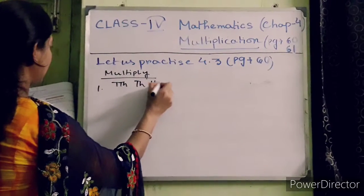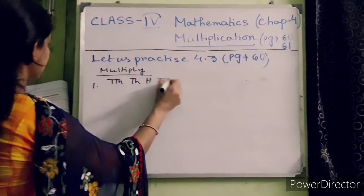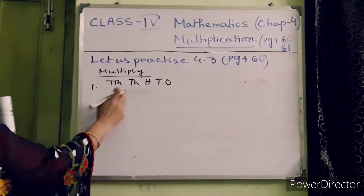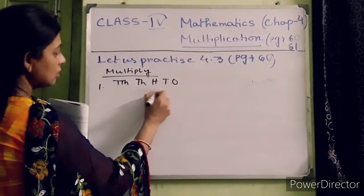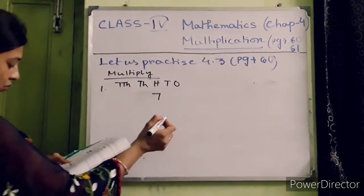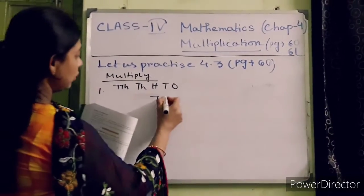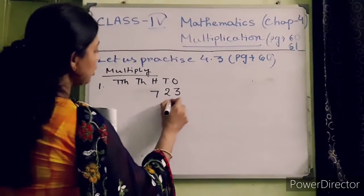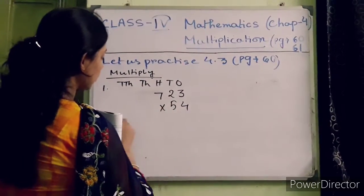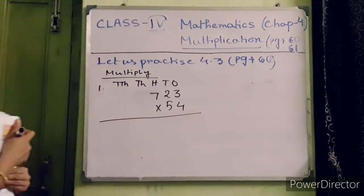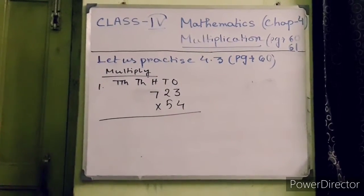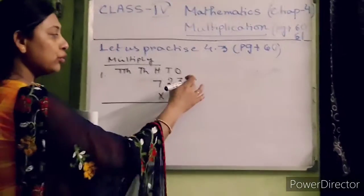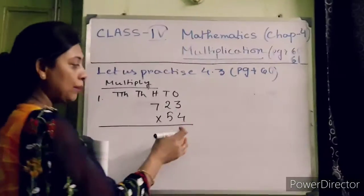Setting up the place value table: 10,000, thousands, hundreds, tens, and ones. The number is 723. Multiply with 54. For this multiplication, first you multiply this number with 4. Four into three is twelve.